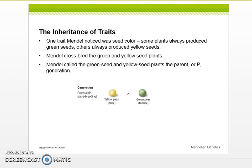So through his plight, one trait Mendel noticed was seed color. Some plants always produce green seeds while others were always yellow. So he crossbred the green and the yellow seed plants to see what would happen. He called the green seed and yellow seed plants the parent or P generation. That's a word you need to know, P generation.